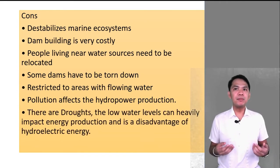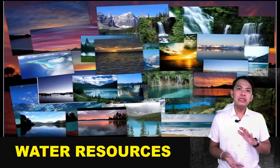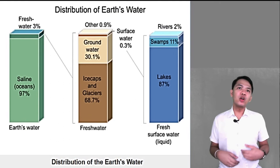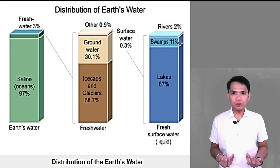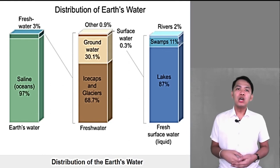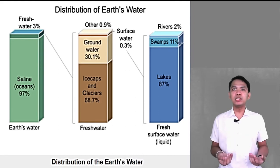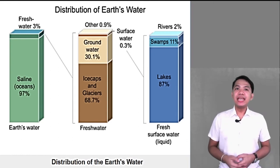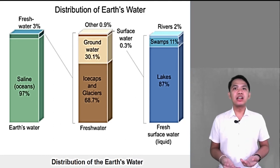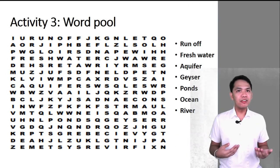The low water levels can heavily impact energy production and is a disadvantage to hydroelectric energy. Let's proceed to water resources. According to research, only 3% of Earth's total water volume is fresh water, while the remaining 97% are saline or salt water. Concentrating only on fresh water, almost 68.7% of it is frozen, like the glaciers and ice cap. 30.1% is groundwater, and the remaining 0.1% is fresh surface water. From there, 87% are lakes, 11% are swamps, and the rest of the 2% are rivers and other fresh surface water sources.